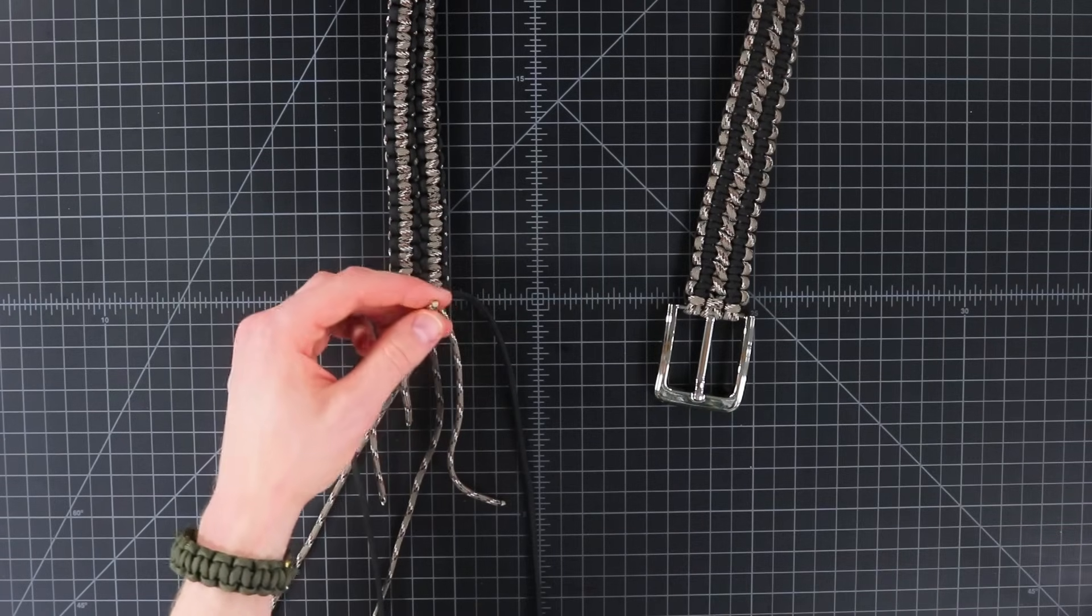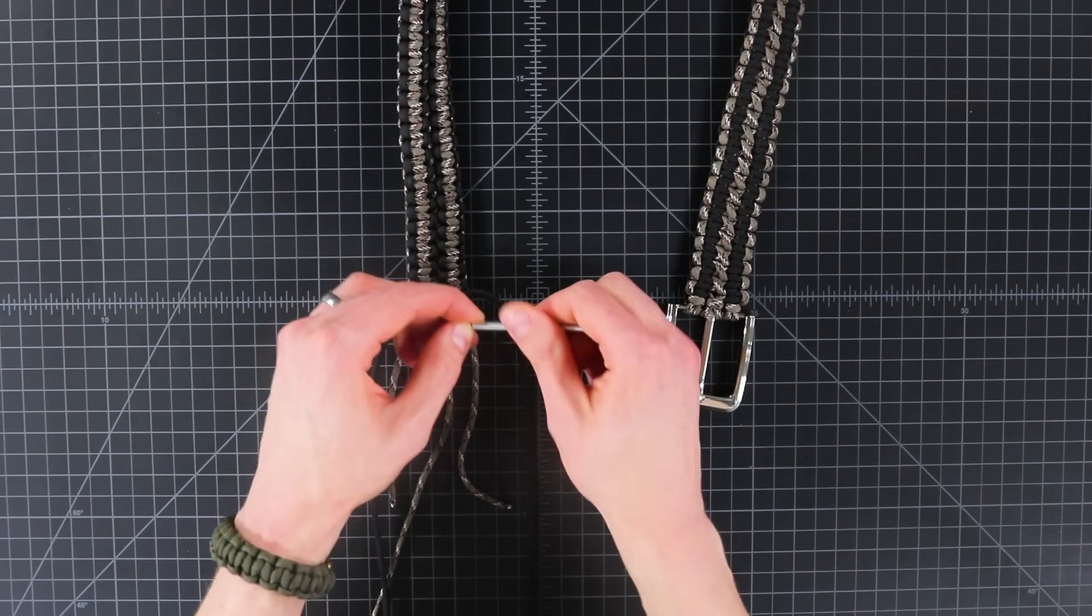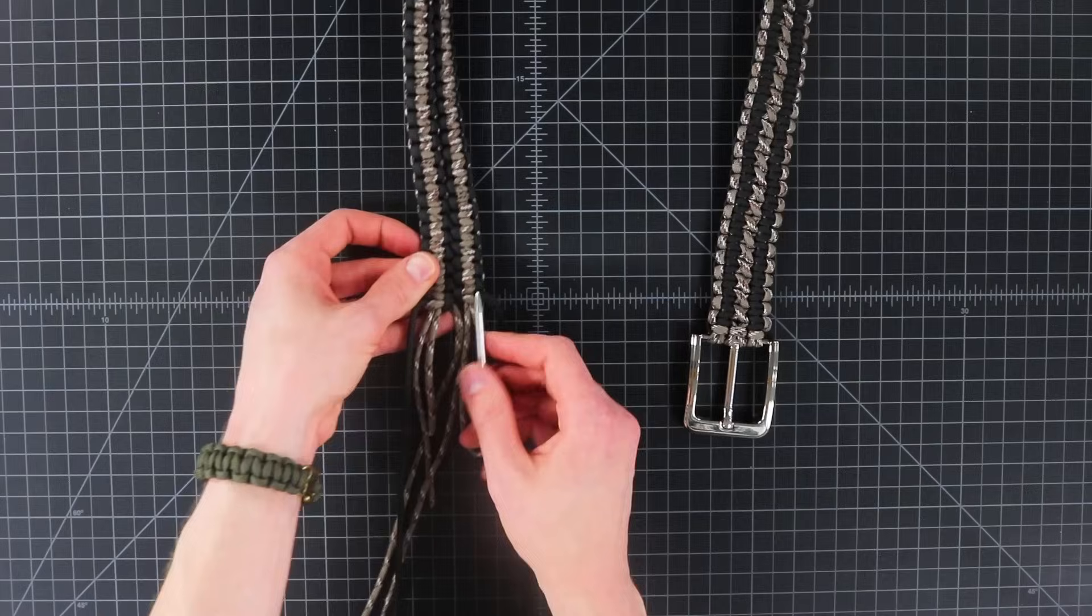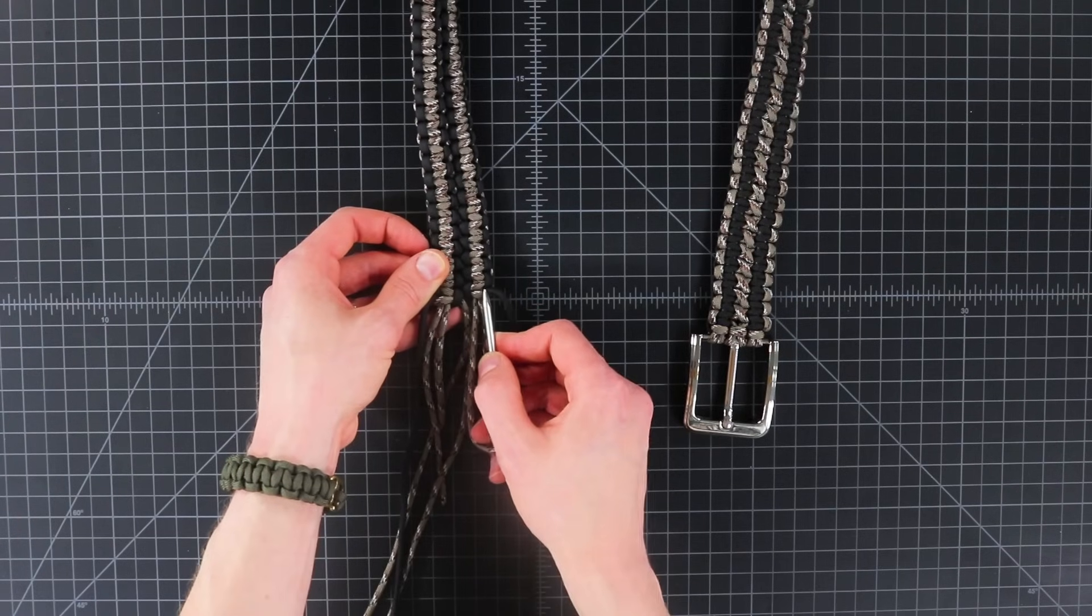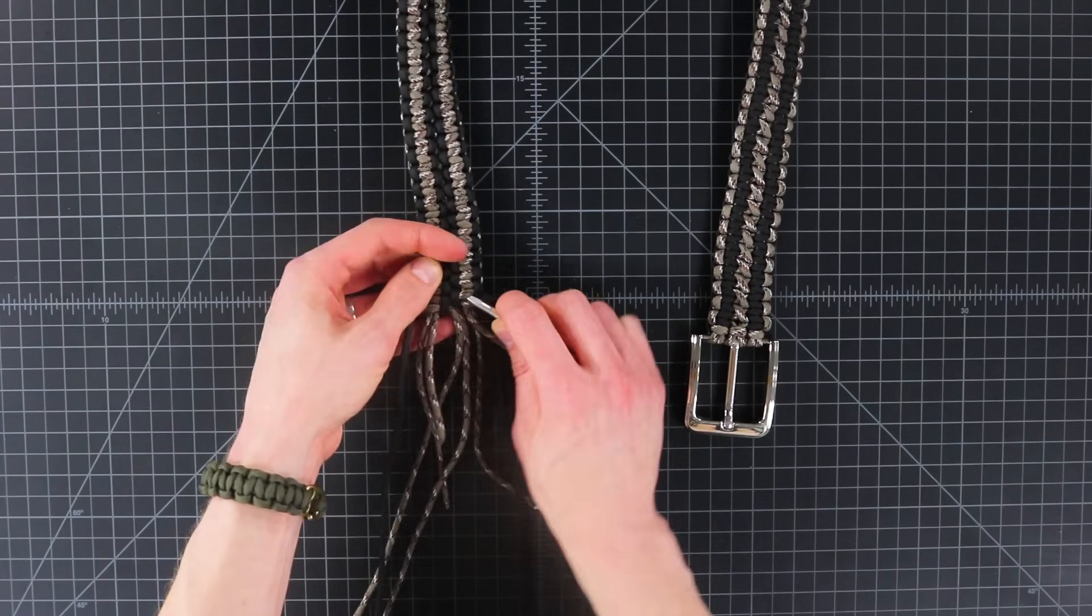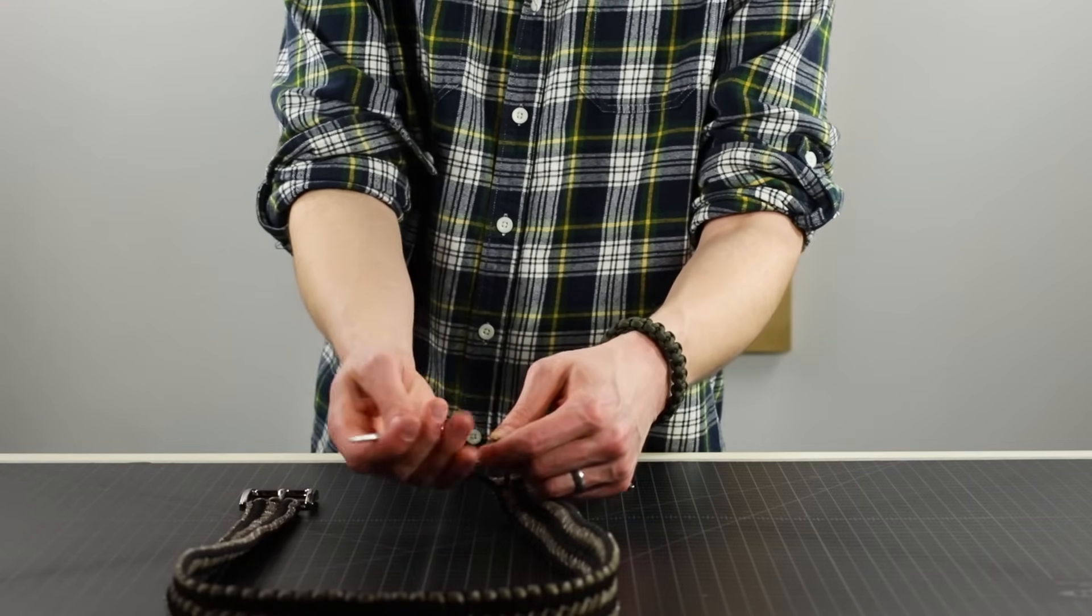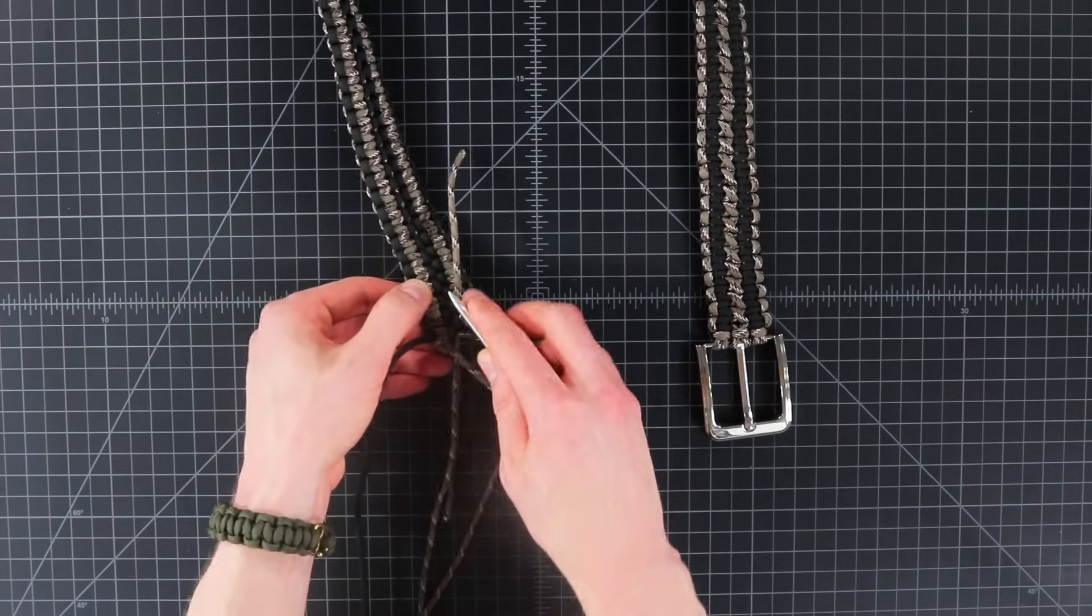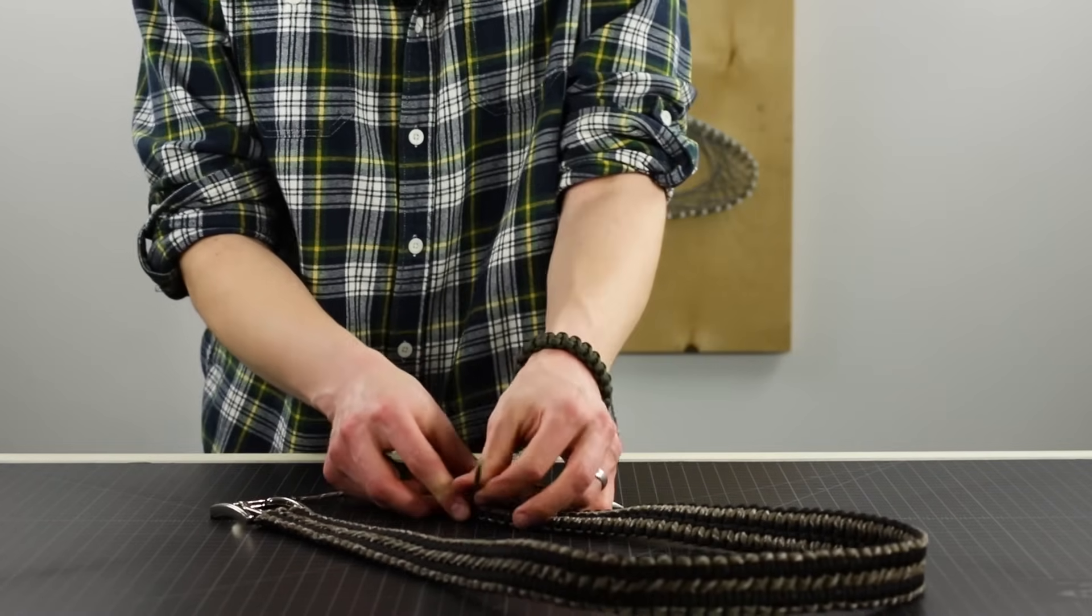So to put a fid on it, we'll just have to melt the end and then screw on your fid. After you screw your fid on, you'll go over the first row and then underneath the next two. Then remove your fid and put it on the other inside core strand, over that first one and then underneath the next two. There we go. Pull both of those down tight.